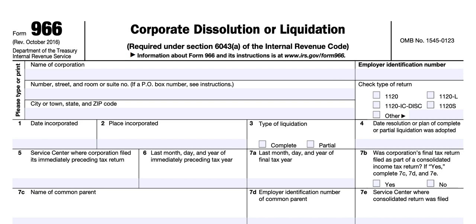On line 7a, enter the last month, day, and year of the final tax year. On line 7b, indicate whether the corporation's final tax return was filed as part of a consolidated income tax return — select yes or no. If you select yes, you must complete lines 7c, 7d, and 7e. If you select no, simply proceed to line eight.